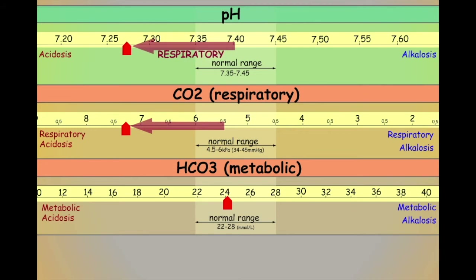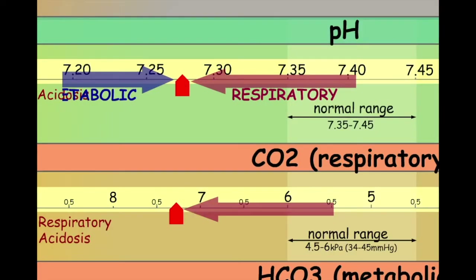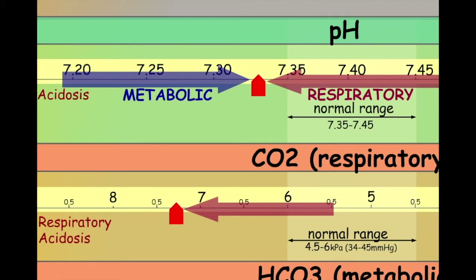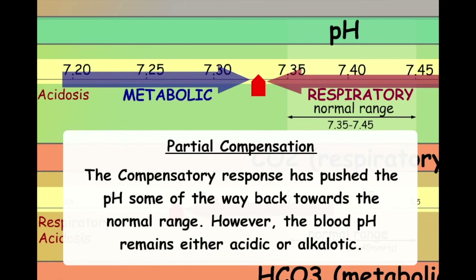The kidneys, however, can compensate for this by secreting more bicarbonate. Increased levels of bicarbonate will effectively push the metabolic system in an alkalotic direction. In this example, the kidneys have produced enough bicarbonate to push the acidosis some of the way back towards a neutral pH. We would therefore refer to this situation as a partially compensated respiratory acidosis, as the metabolic system has not fully pushed the pH all the way back to neutral.